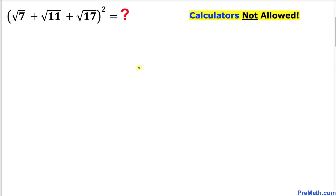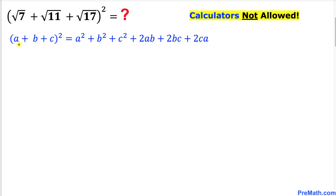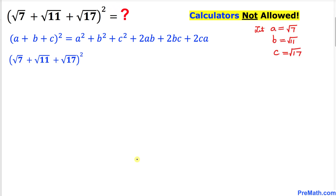Let's get started with the solution. We can see that we are dealing with a trinomial and we want to take the square of this trinomial. So let's recall the well-known formula: a plus b plus c, whole square. We will use this to take care of our given problem. Let's make a substitution: let a equal to square root of 7, b equal to square root of 11, and c equal to square root of 17.